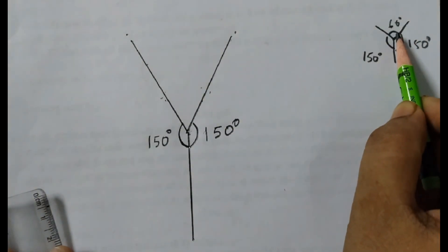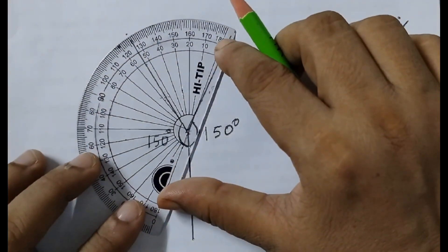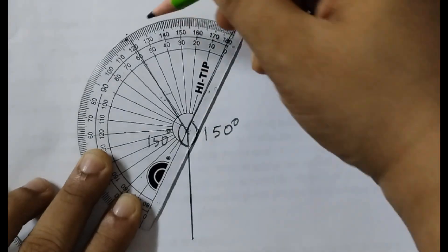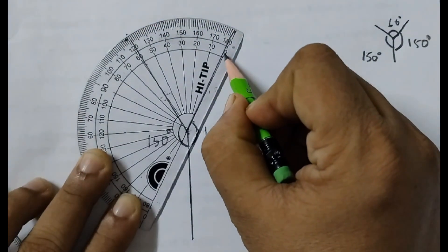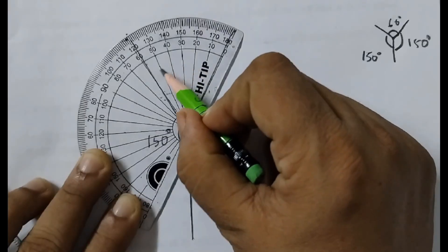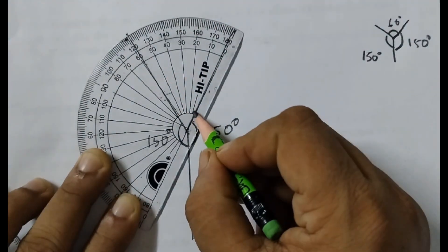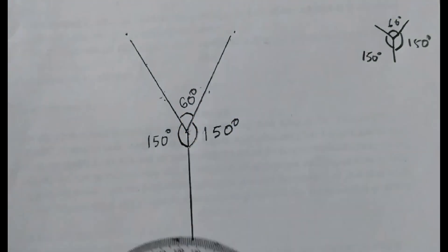Now here we want 60 degrees. Now let us first measure what degree we have here. Place the protractor like this. When we place the protractor like this, we see that this angle is already 60 degrees. Here see, 0, 10, 20, 30, 40, 50, 60 and here we already have the point here. This angle is already 60 degrees. So just write it here 60 degrees.